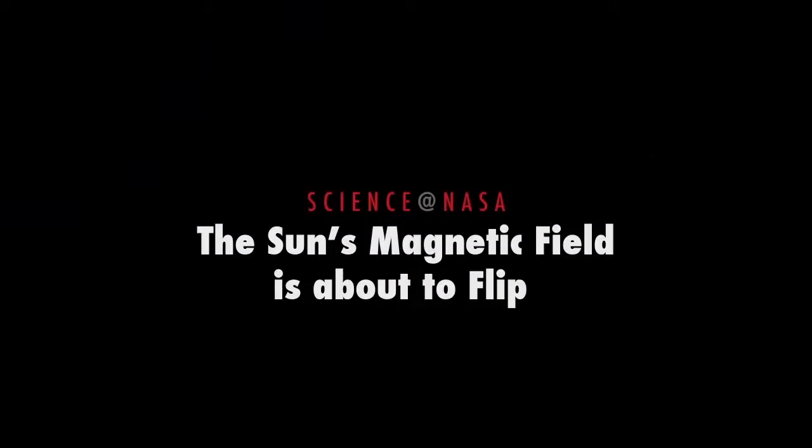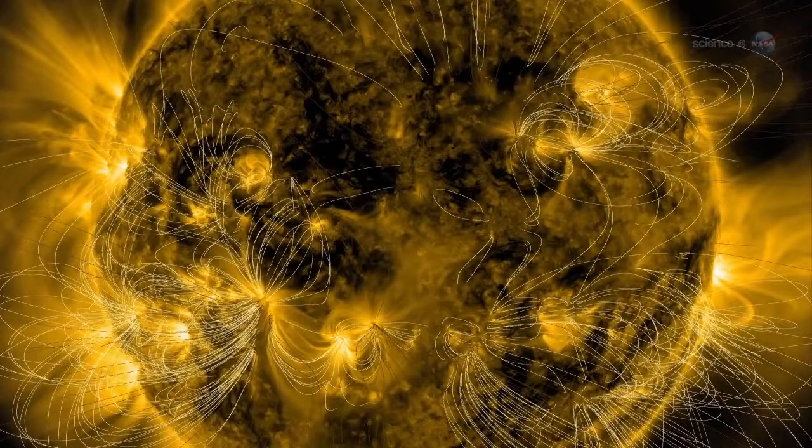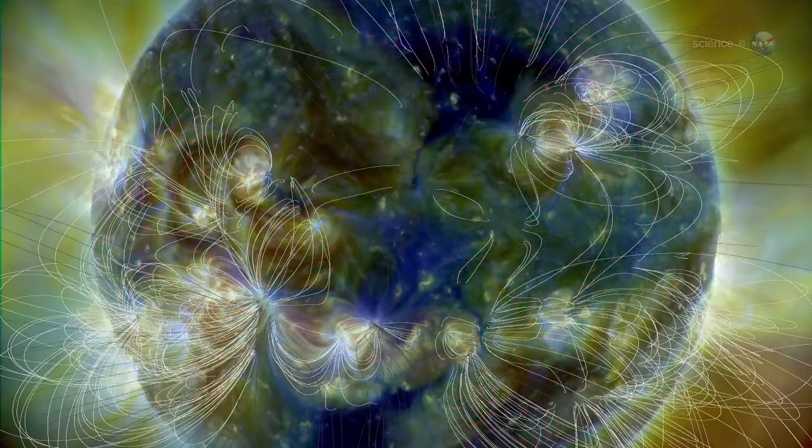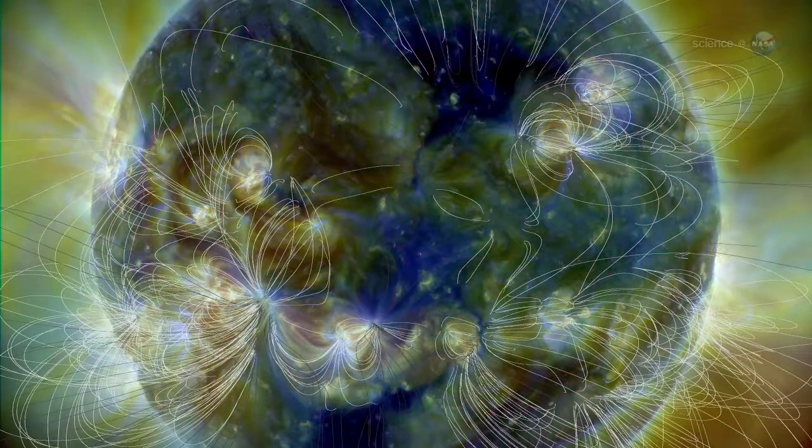The Sun's magnetic field is about to flip, presented by Science at NASA. Something big is about to happen on the Sun. According to measurements from NASA-supported observatories, the Sun's vast magnetic field is about to flip.